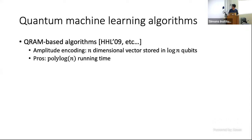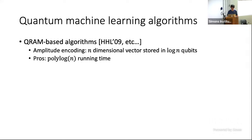The first class of quantum machine learning algorithm is what we call QRAM-based algorithms. The basic model is that we use amplitude encoding, where an n-dimensional vector, which is classical data, is assumed to be encoded using only log n qubits. And therefore, these algorithms can achieve a polylog n running time, which is very fast.